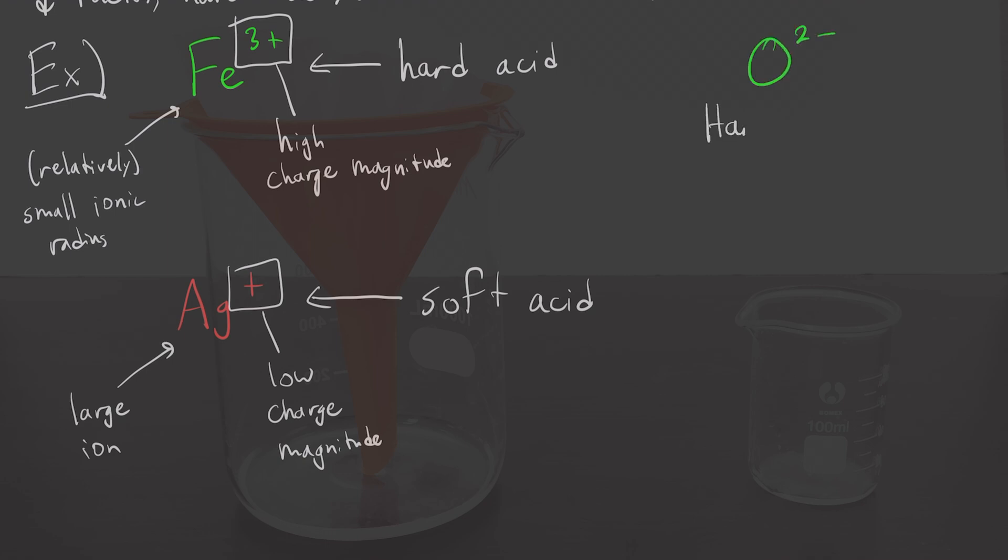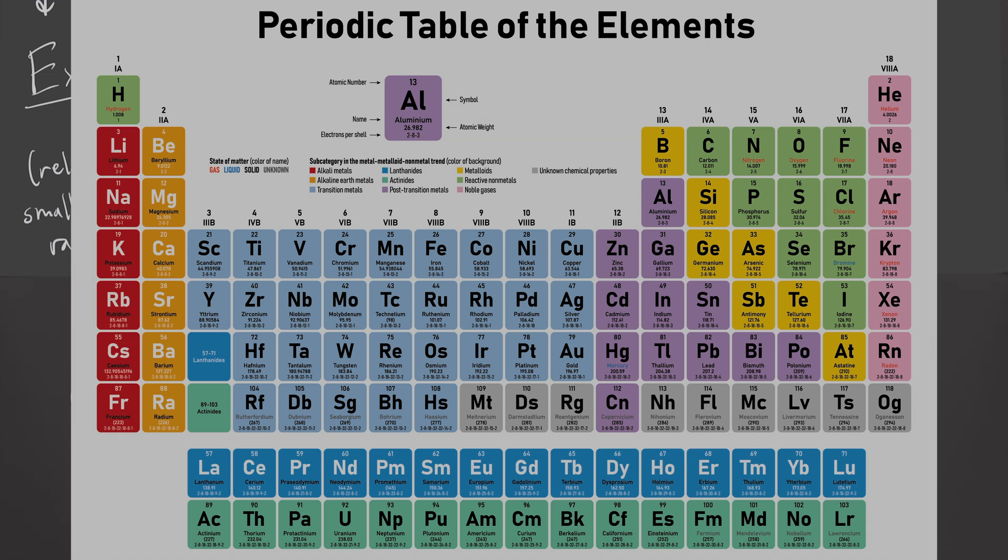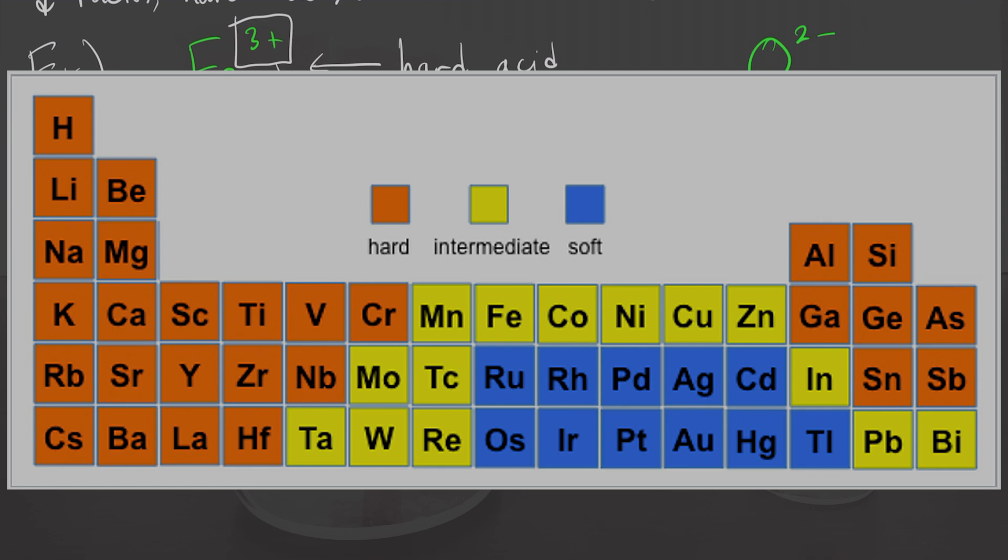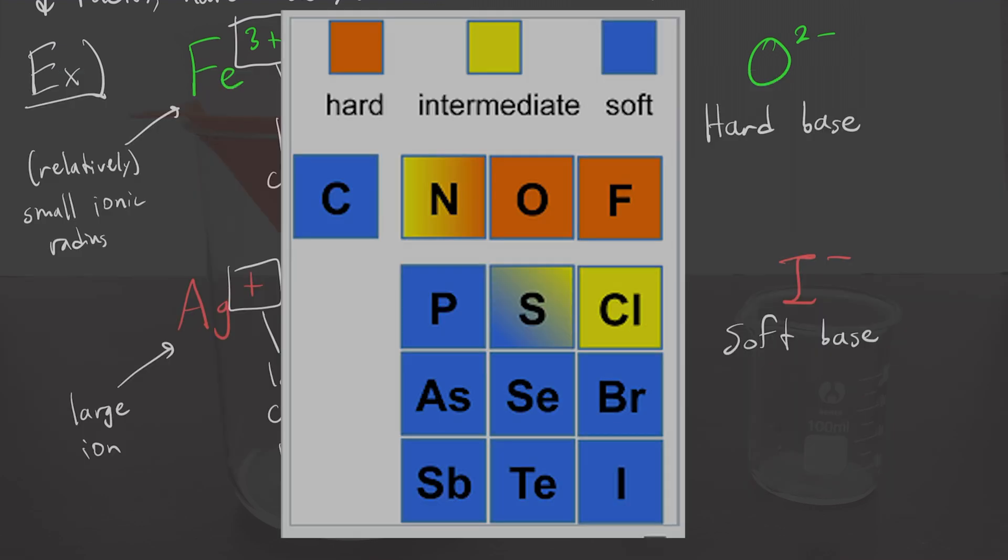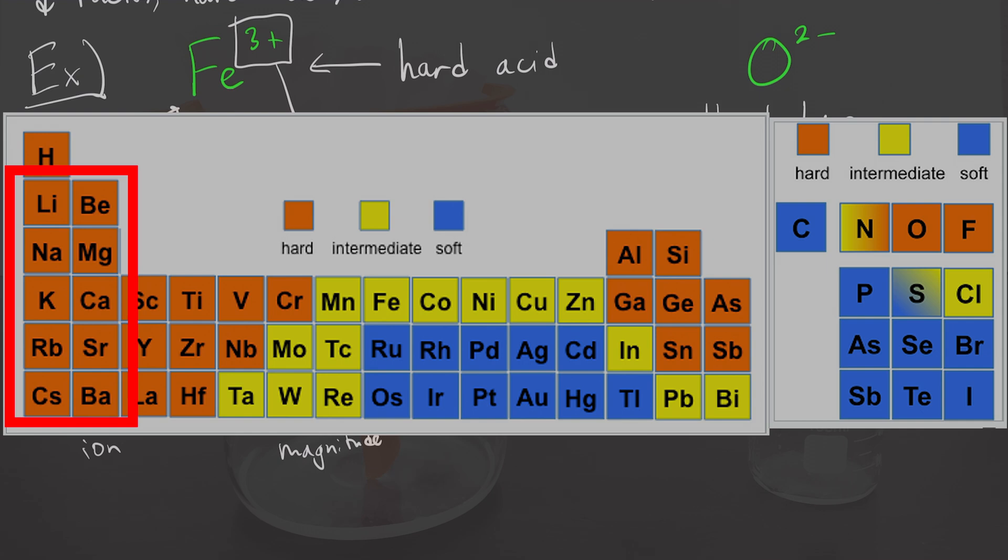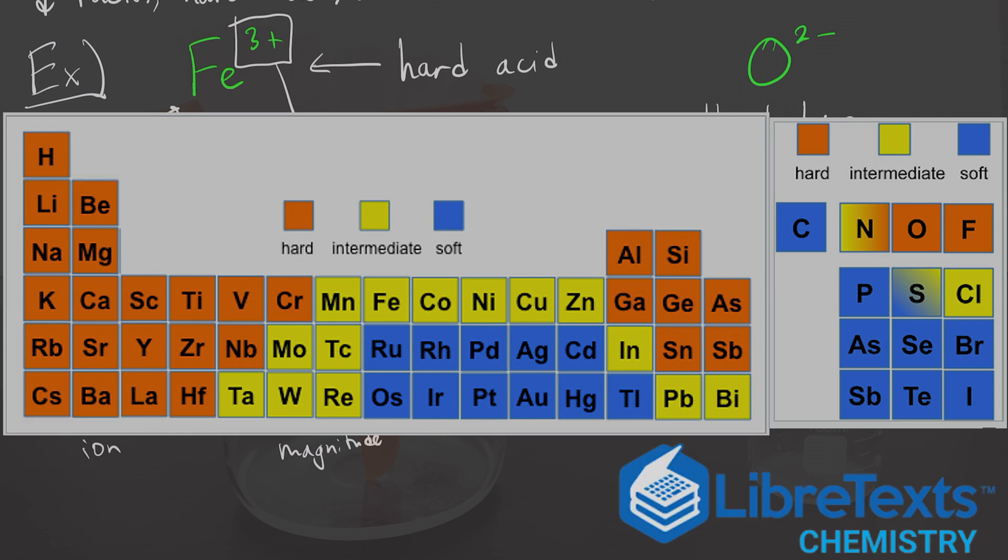Our hardness trends can also be seen on the periodic table. For acids, or cations, the trend looks like this, and for bases, the trend looks like this. We consider ions on the top left side of the periodic table to be hard acids even though they usually have a +1 charge just because they're so small. As a disclaimer, this table is from an online source and I personally would consider elements on the bottom left, mainly cesium, rubidium, barium, strontium, to be soft acids because they are very big and their charge is smaller. I agree with pretty much everything else though.